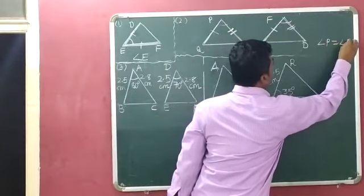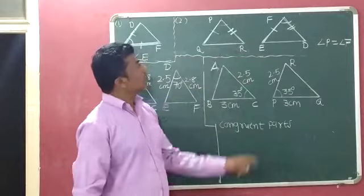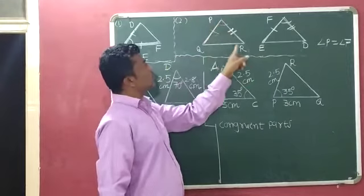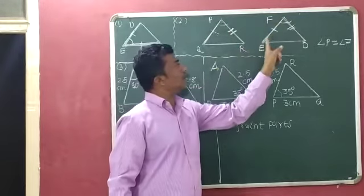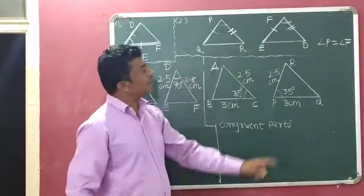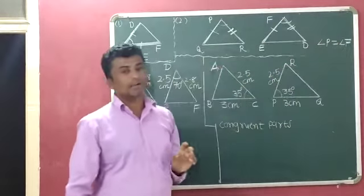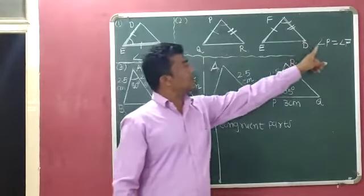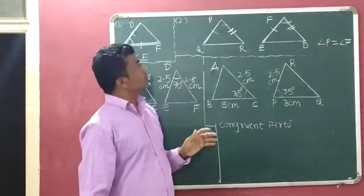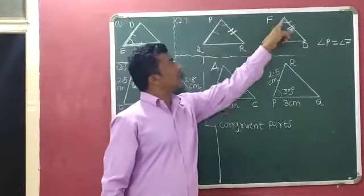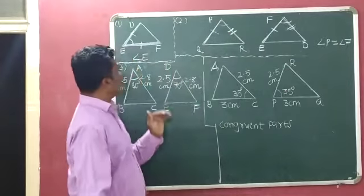If we add that angle P is equal to angle F, then triangle PQR is congruent to triangle FED. The final answer is angle P is equal to angle F. If we consider angle P equal to angle F, then triangle PQR and triangle FED are both congruent to each other.